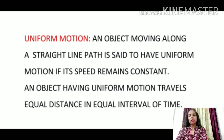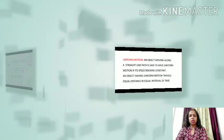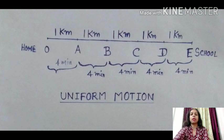First we will see uniform motion. An object moving along a straight line path is said to have uniform motion if its speed is constant. An object having uniform motion covers equal distances in equal intervals of time.